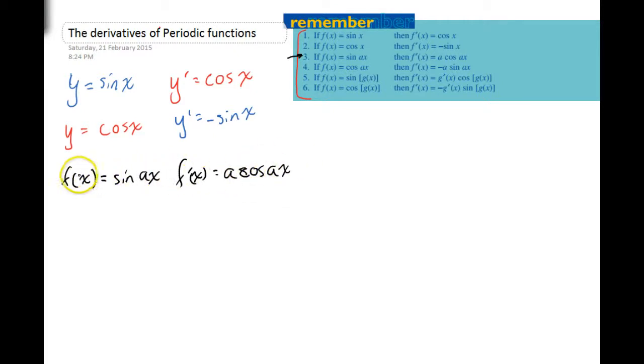In terms of what that actually means, if we have some numbers in there, that means that if f of x equals sine 5x, f dash x would equal 5 cos 5x. Pretty straightforward.